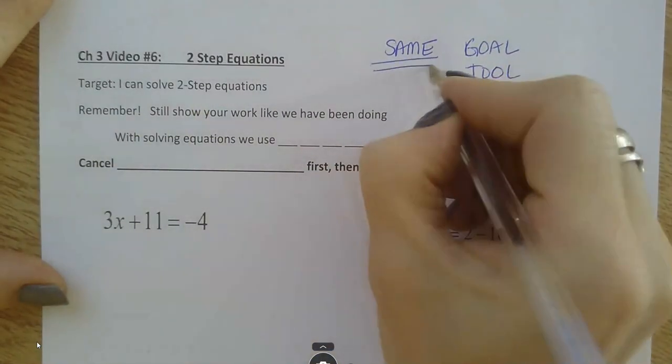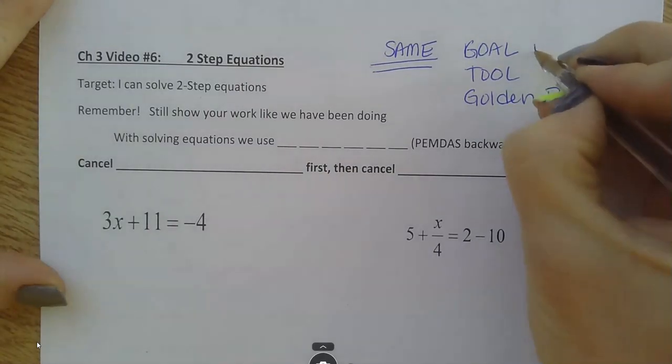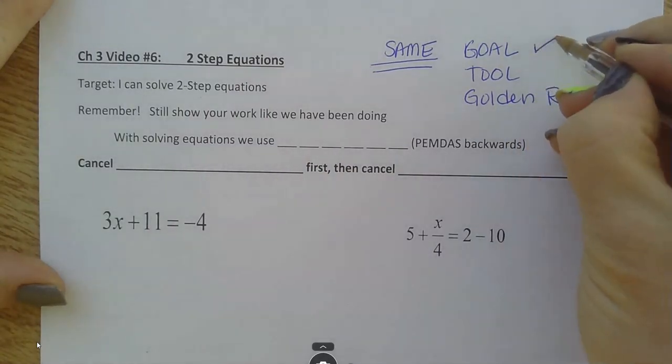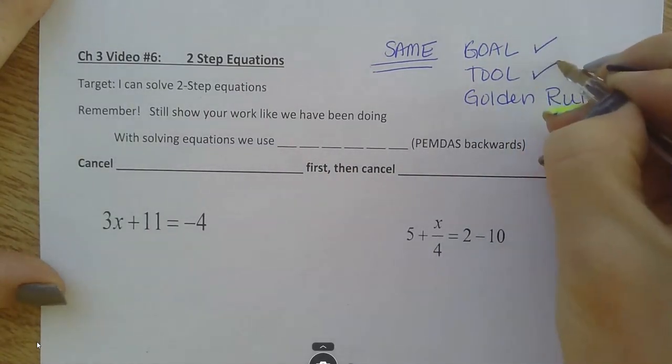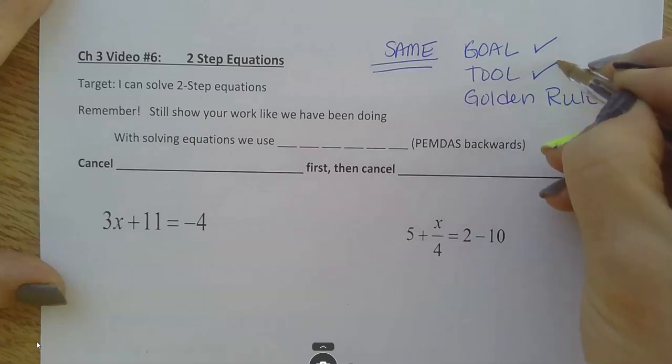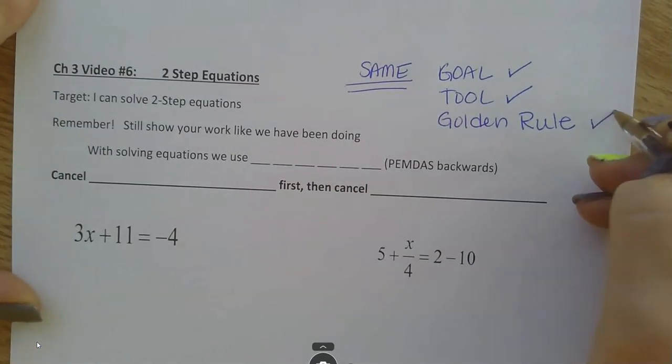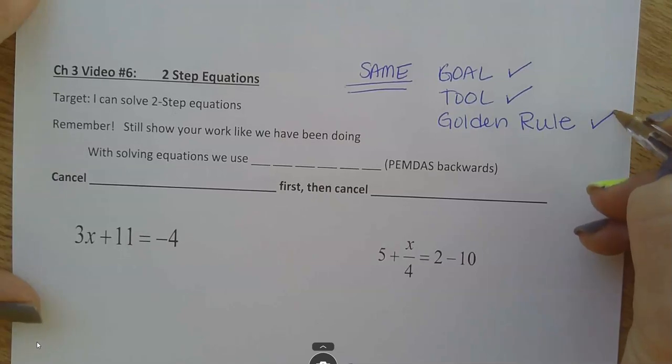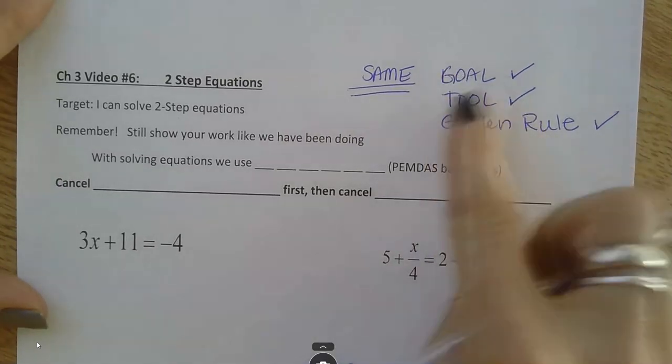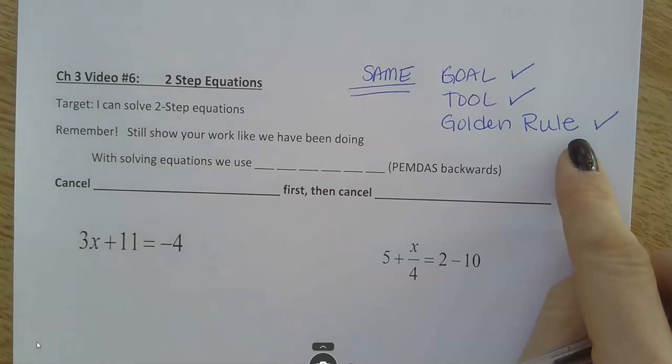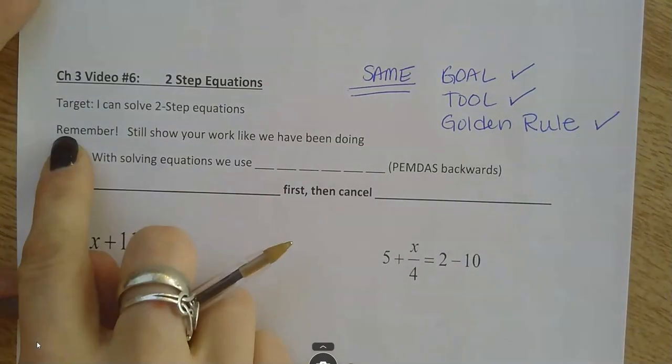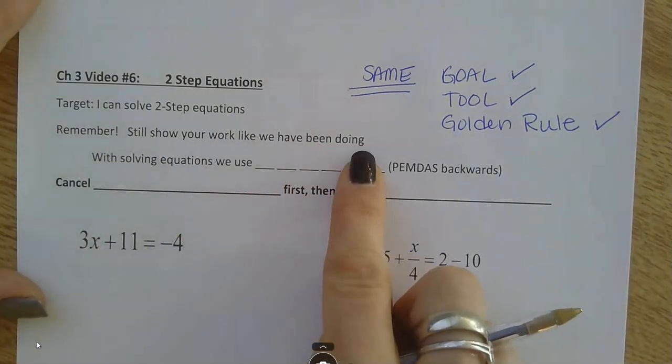Just like we did in one-step equations, we have the same goal. We're still trying to isolate the variable. We're still using inverse operations to cancel things out. That's our tool. And we still have to keep things balanced. Whatever we do on one side, we have to do on the other side. So, everything we learned with one-step equations, still true.